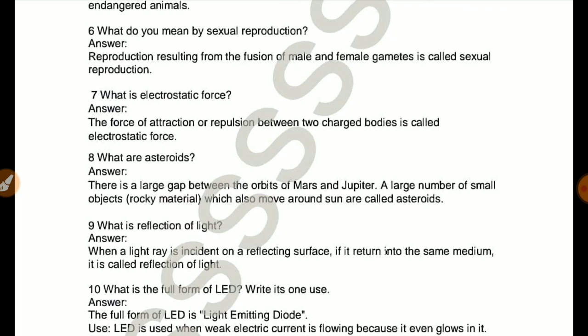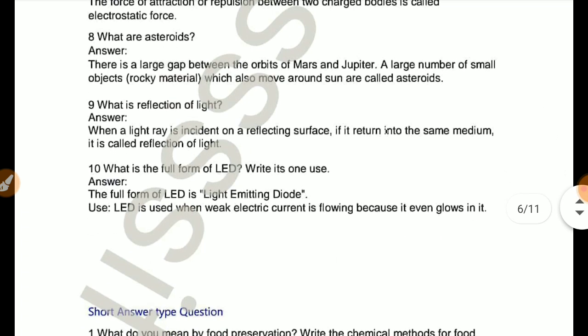What are asteroids? There is a large gap between the orbits of Mars and Jupiter. A large number of small objects which also move around sun are called asteroids. What is reflection of light? When a light ray is incident on a reflecting surface and it returns into the same medium, it is called reflection of light.